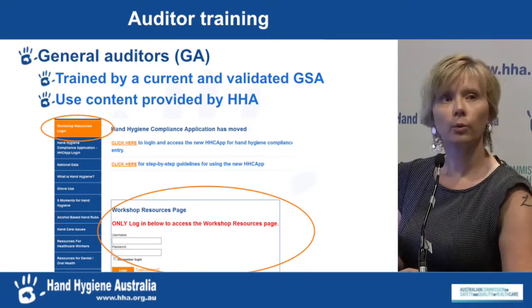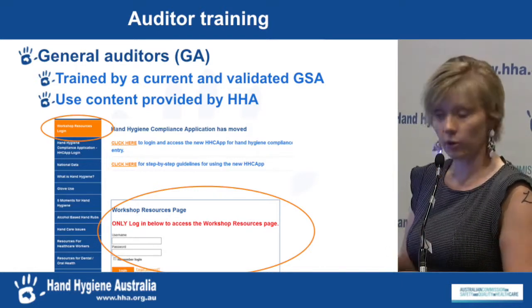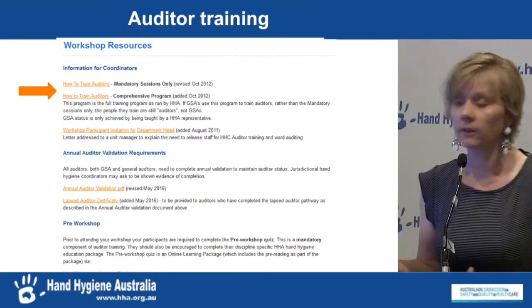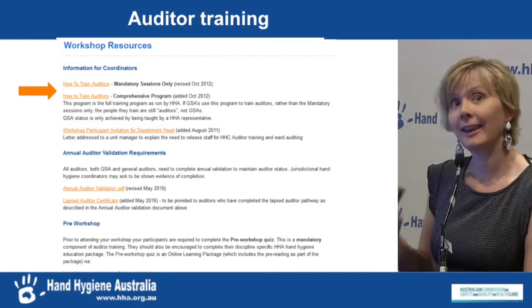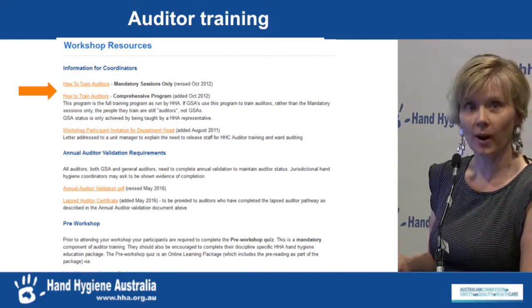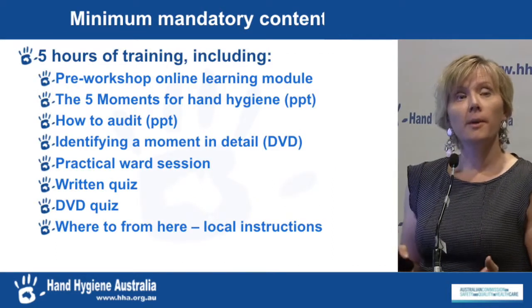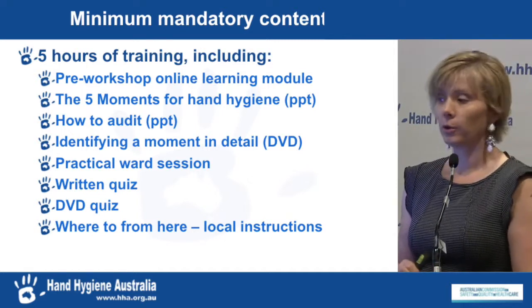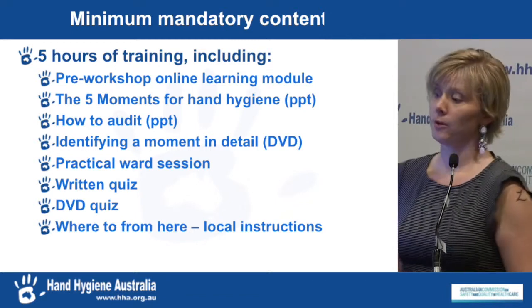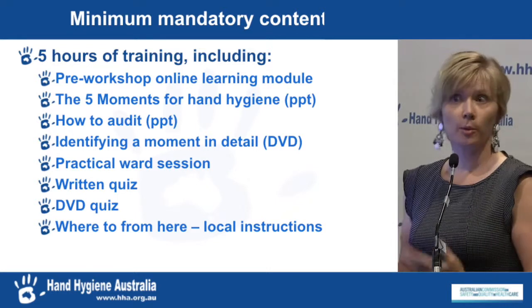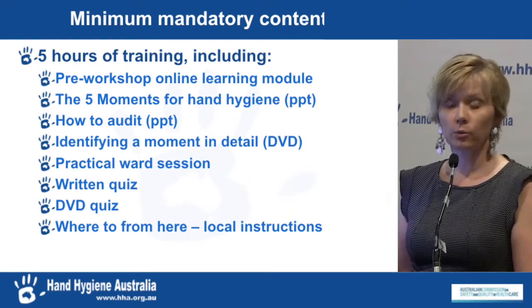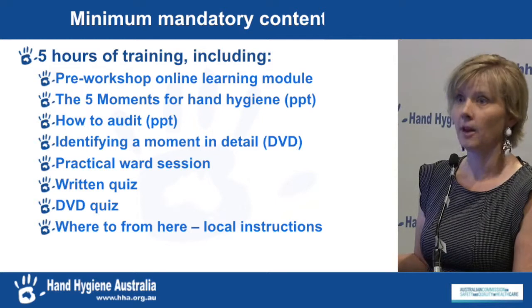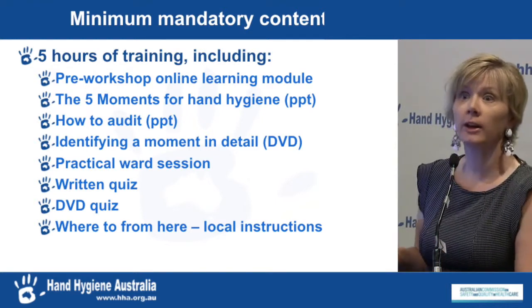General auditors are trained using content provided by Hand Hygiene Australia from our website. There's a specific gold standard auditor login, and when they log in they get the workshop resources page, which is not visible without that login. At the very top of that page is a 'how to train auditors' document, which is key. There is a minimum mandatory content of five hours of training, including the pre-workshop online module, the five moments for hand hygiene PowerPoint, how to audit PowerPoint, using the DVD to identify moments and doing scenarios, a practical ward session, the written quiz and DVD quiz, and then local instructions.